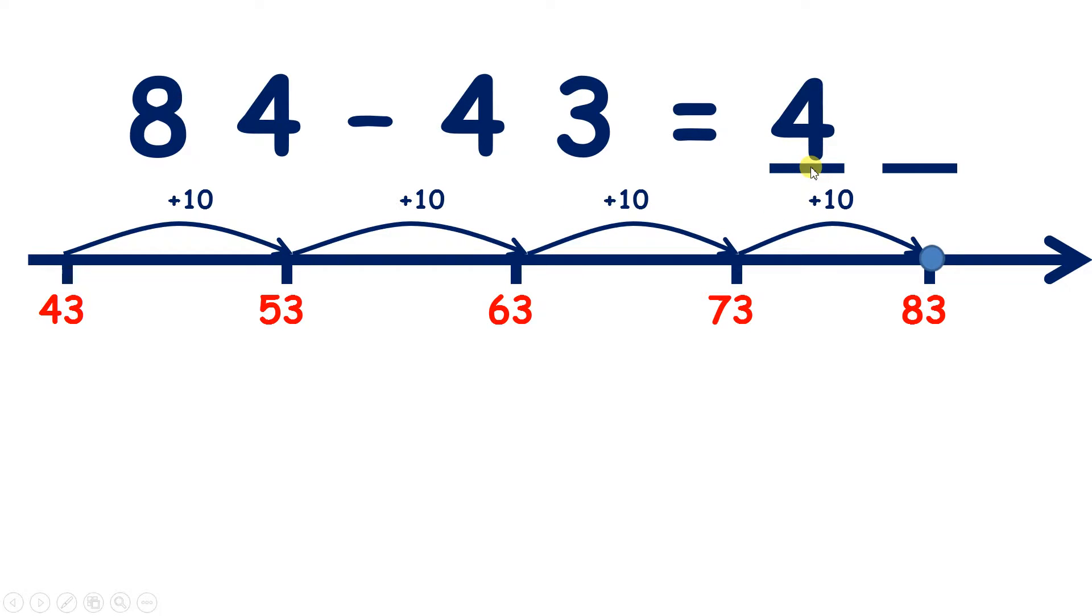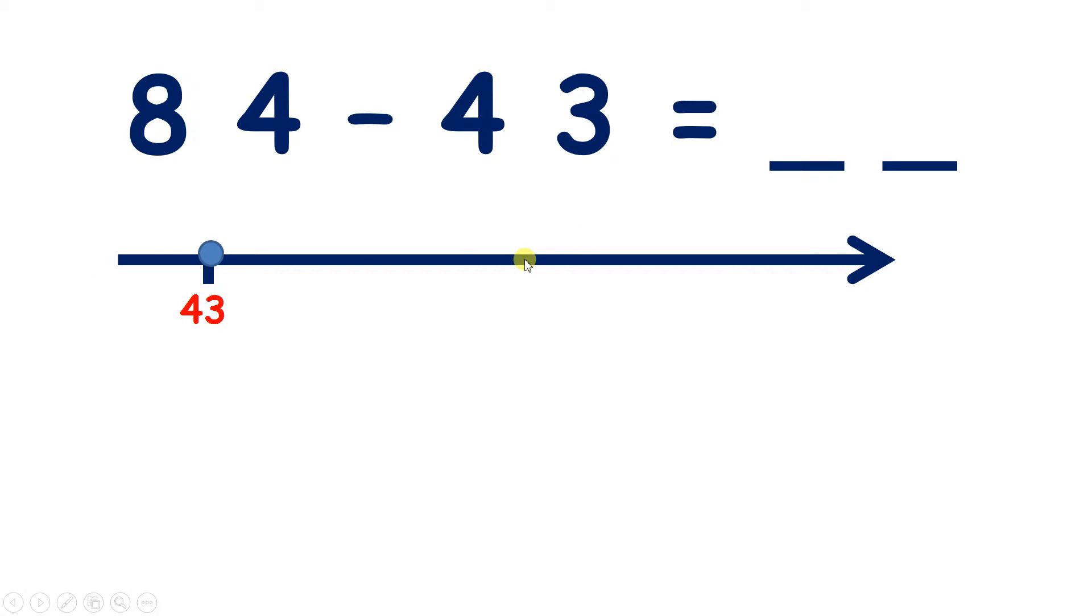So we've counted on four tens and now if we add one we get to 84, so we have one unit. So 84 subtract 43 is 41, or the difference between 84 and 43 is 41.